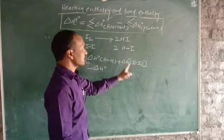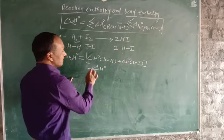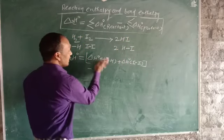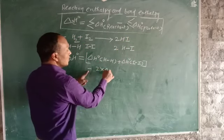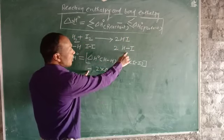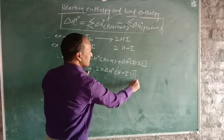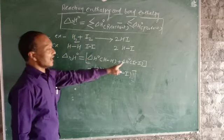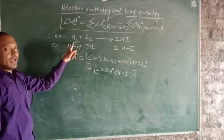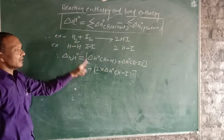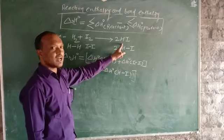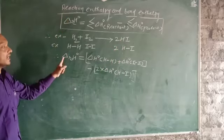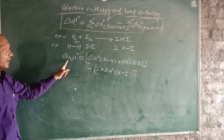Minus the summation of products. The products are 2HI, so it is 2 multiplied by ΔH° of H–I bond. So H–H and I–I are the reactants and H–I is the product. From this we can calculate the reaction enthalpy.